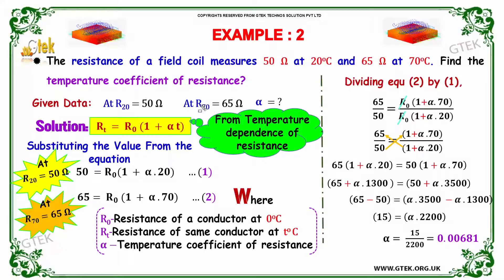And we got the temperature T is 70 and resistance is 65. We got 65 is equal to R_0 into 1 plus alpha into 70. We got two equations.